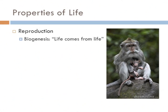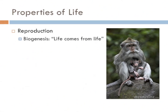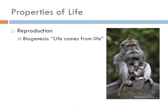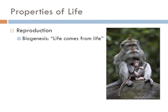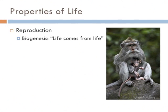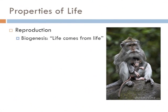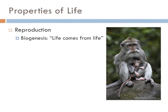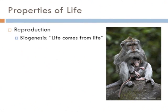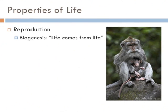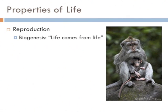One of the main properties of life is that it reproduces itself, and this is known as biogenesis. Bio meaning life, genesis meaning the creation of, and it literally translates to life comes from life. We know a few molecules that are able to reproduce themselves — the two that really come to mind are DNA and RNA. These molecules by themselves have the ability to reproduce themselves. However, DNA and RNA by themselves are not considered alive; they require something more. The ability to reproduce itself is a very important aspect of something that's alive.